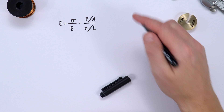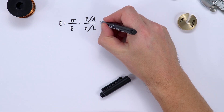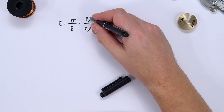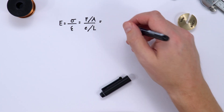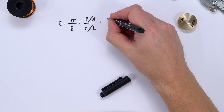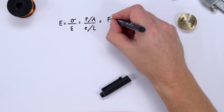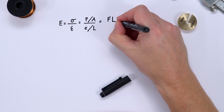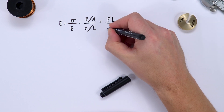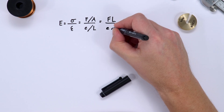That looks a little messy, so we can bring L up and A down to say that the Young Modulus is equal to FL over EA.